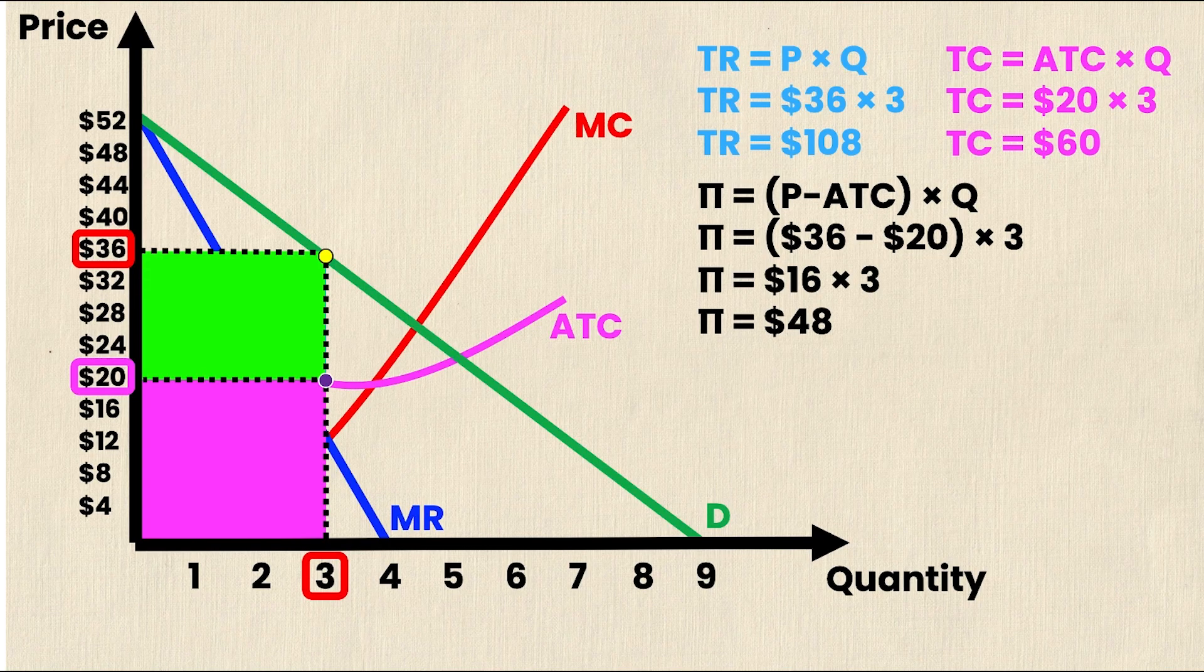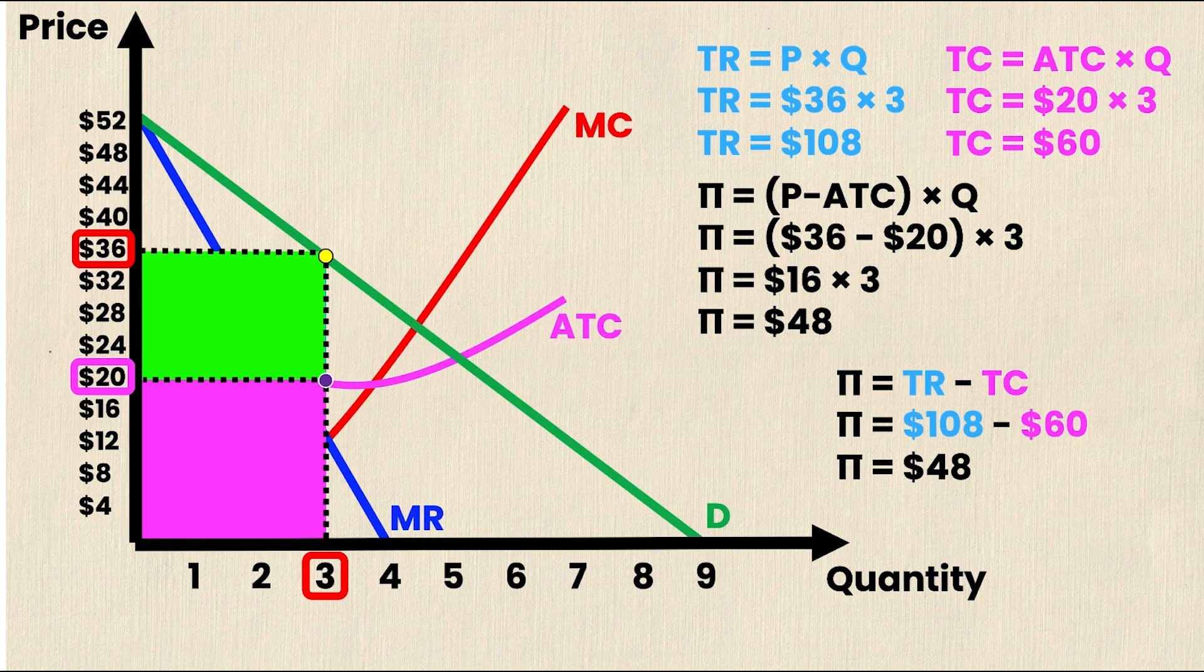And you might be looking at the total revenue and the total cost and saying, can't I just take the difference? And to be honest, the answer is yes. You can most certainly take the difference because profit is simply equal to total revenue minus total cost, which once you've solved for both of them is 108 minus 60, which as you can see on the screen is still $48. So you can either calculate the area of that green rectangle, or you can simply subtract total cost from total revenue. Both ways will give you the exact same answer, profit.